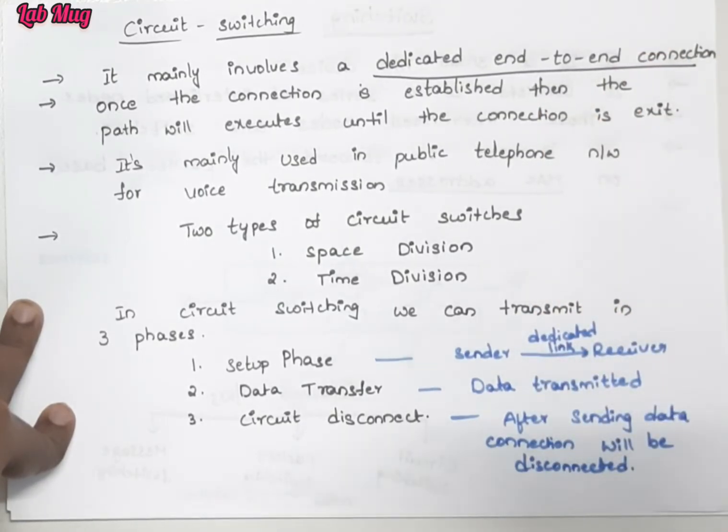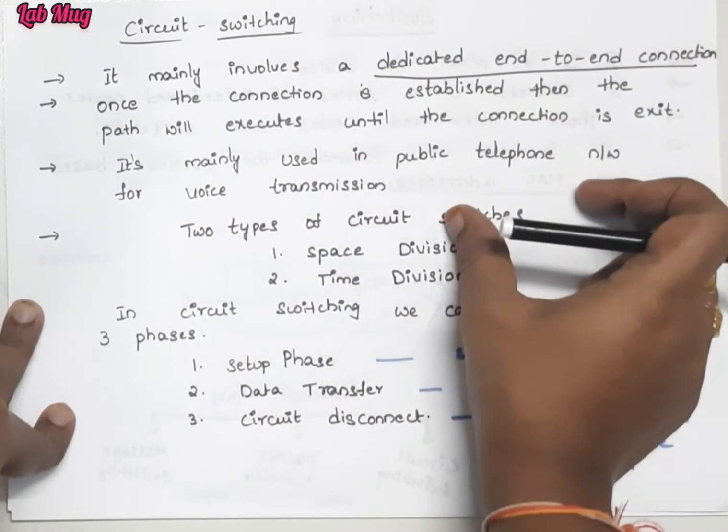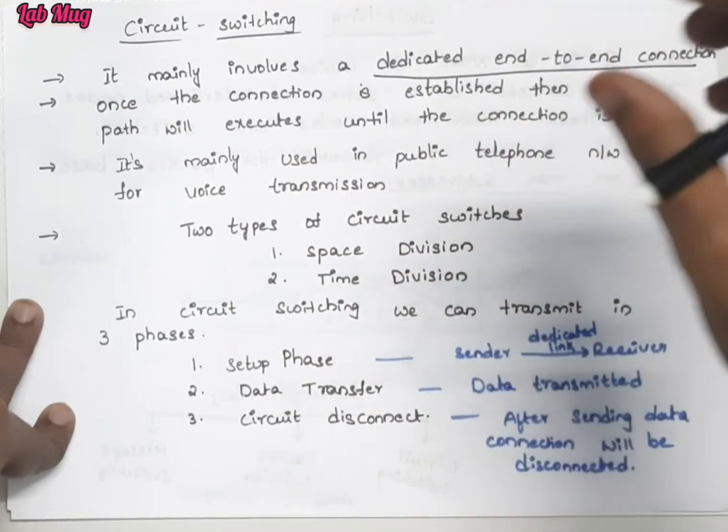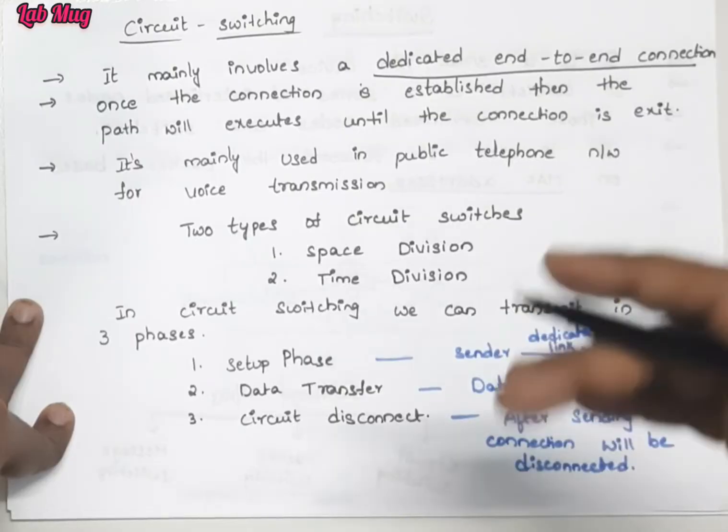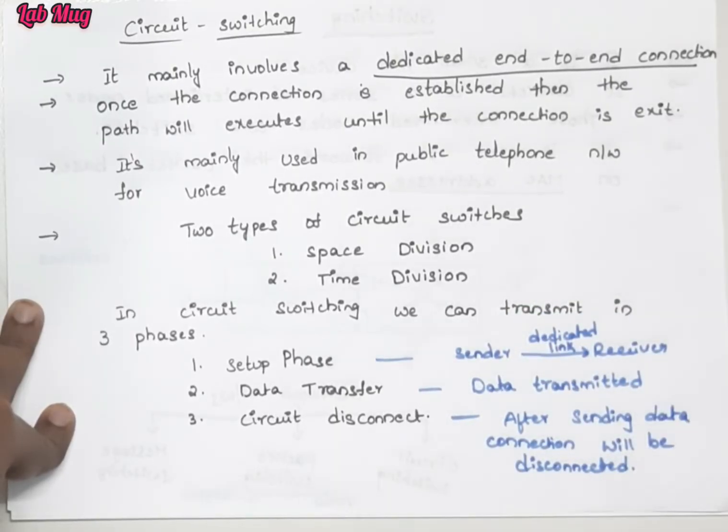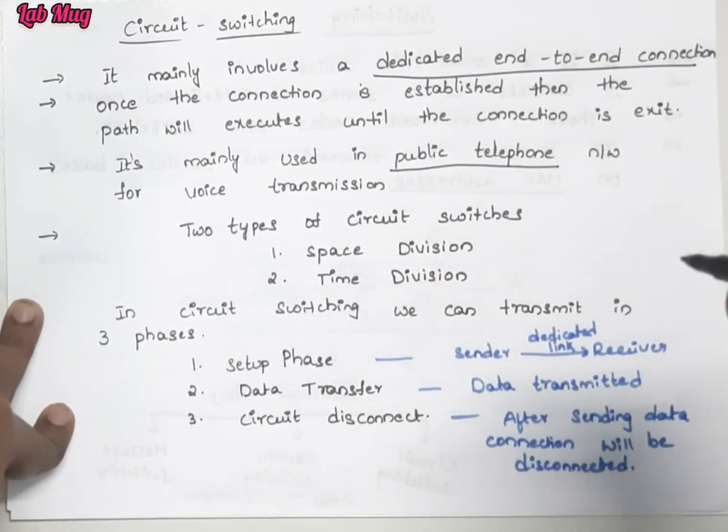In circuit switching it mainly involves a dedicated end-to-end connection. Compulsorily between devices or networks we need an end-to-end connection. Once that connection is established, then it will execute the transaction. When we transmit data from sender to receiver, first we establish the end-to-end connection between them. Then transmission starts between them.